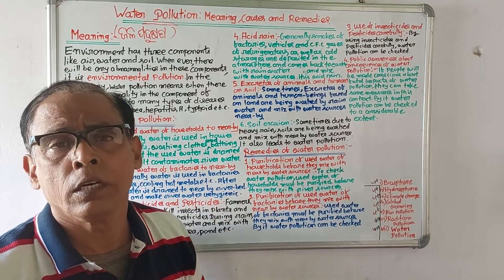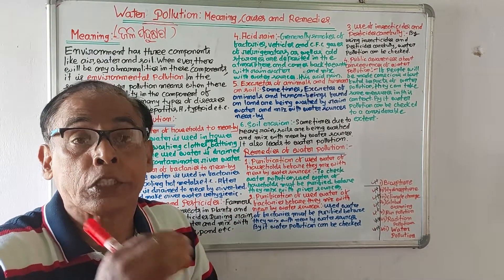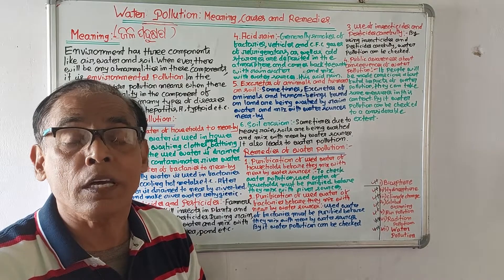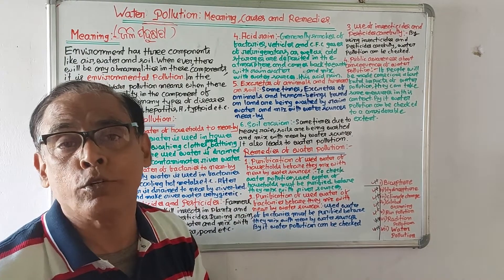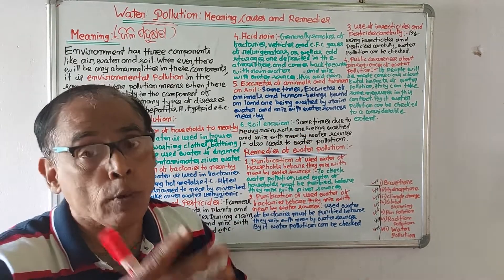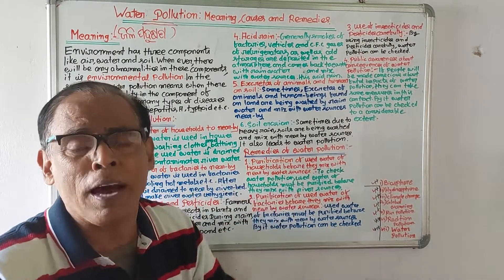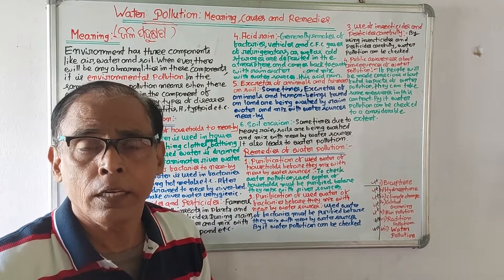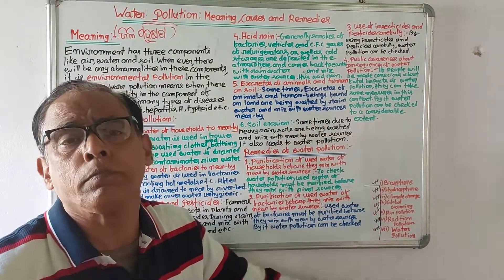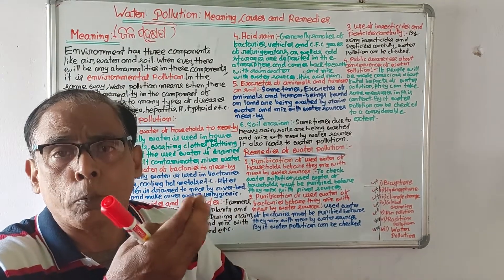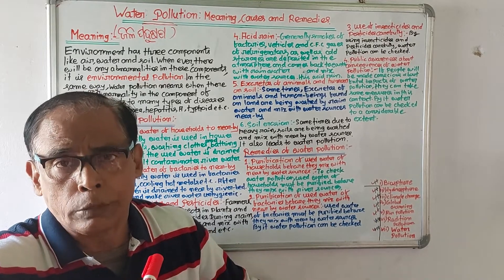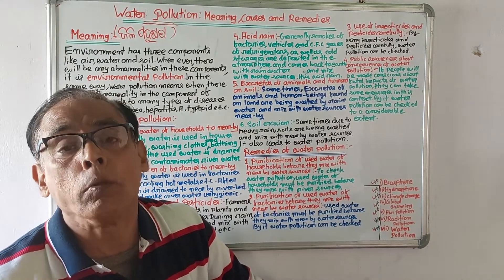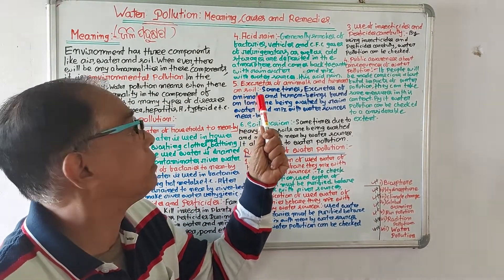Acid rain is caused when pollutants from vehicles, factories, and refrigerators releasing CFC gases accumulate in clouds. When it rains, these pollutants come down and pollute rivers and seas, spreading pollution further.